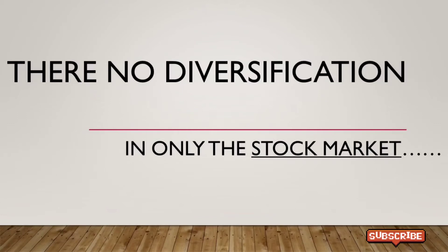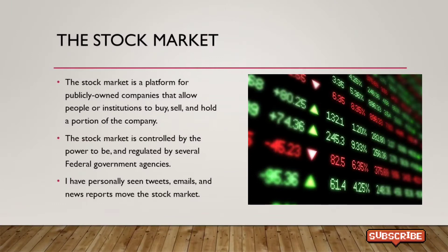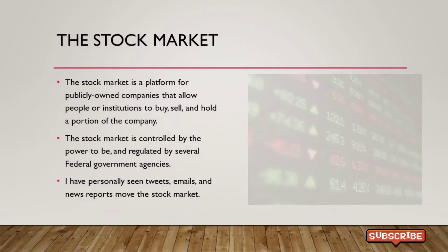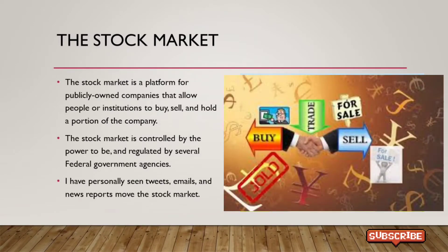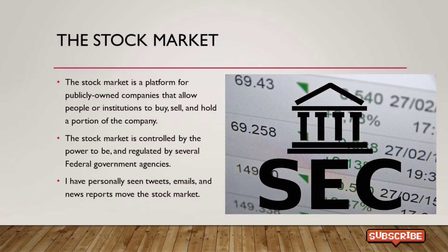Let's have a quick conversation while some retirees get killed during a stock market downturn. We're about to discuss how the stock market is really not truly diversified — there's really no diversification in the stock market. The stock market is a platform for publicly owned companies that allows people or institutions to buy, sell, or hold a portion of the company. It is controlled by the powers that be and regulated by several federal government agencies.